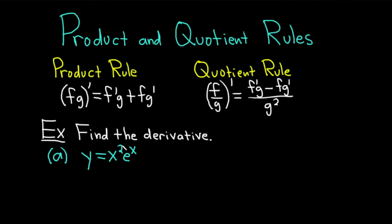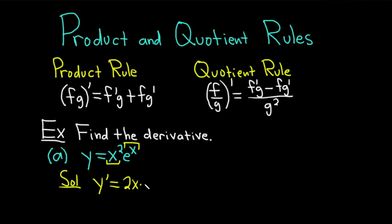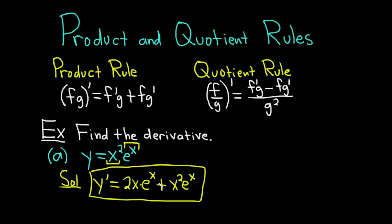Find the derivative. Part a: y equals x squared times e to the x. Because we have a product, x squared times e to the x, we're going to use the product rule. So y prime is equal to... think of f, which is x squared, as your first function, and g, which is e to the x, as your second function. It'll be the derivative of the first, which is 2x from the power rule, times the second, plus the first, which is x squared, times the derivative of the second, which is e to the x. So y prime equals 2x e to the x plus x squared e to the x.